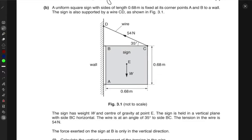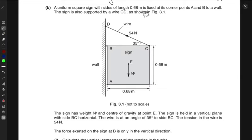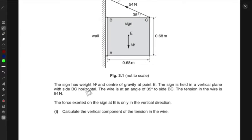Next, a uniform square sign with sides of length 0.68 meters is fixed at its corner points A and B to the wall. The sign is also supported by a wire CD as shown in this figure. So here we can see that this is a sign, it's hinged to the wall like this and the weight is acting downwards and it's attached with a wire like this where the tension in the wire is 54 newtons.